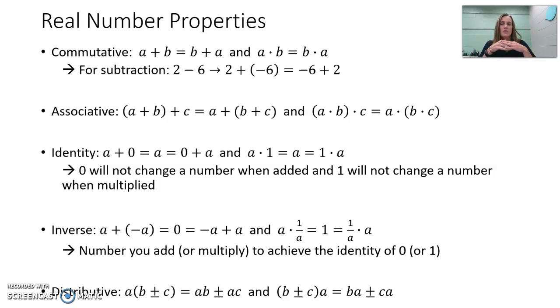I'm not going to read through all of them because, again, you should be pretty familiar, but I do have some extra things to point out. Commutative property technically should only work for addition and multiplication, but you can really make them work for subtraction and division by just rewriting. Rewriting subtraction as an addition problem with a negative, rewriting division as multiplication with a fraction.